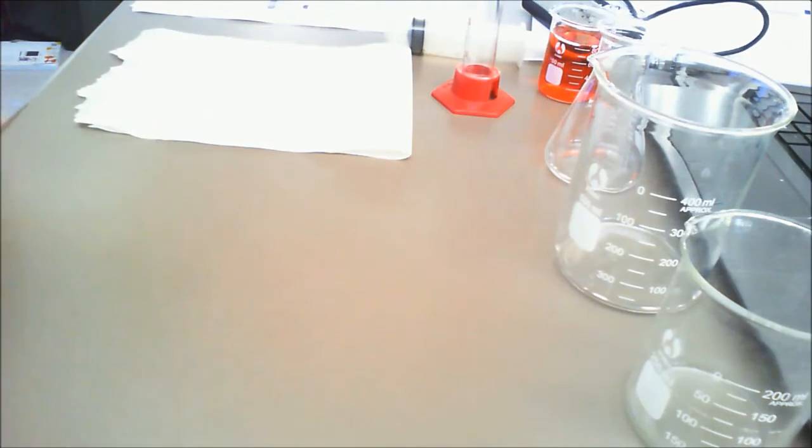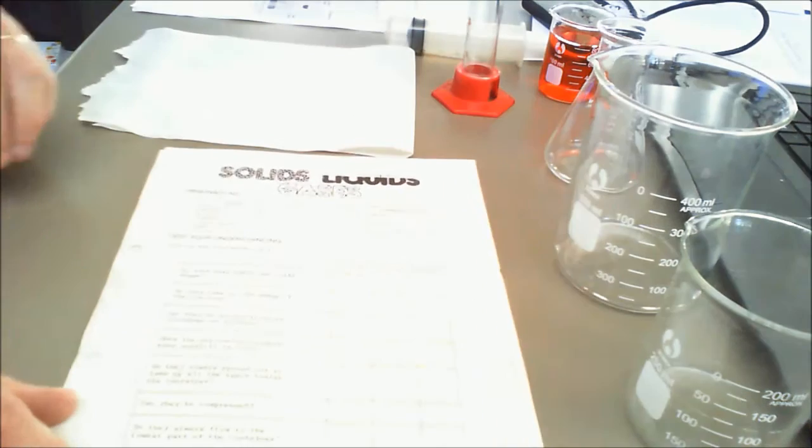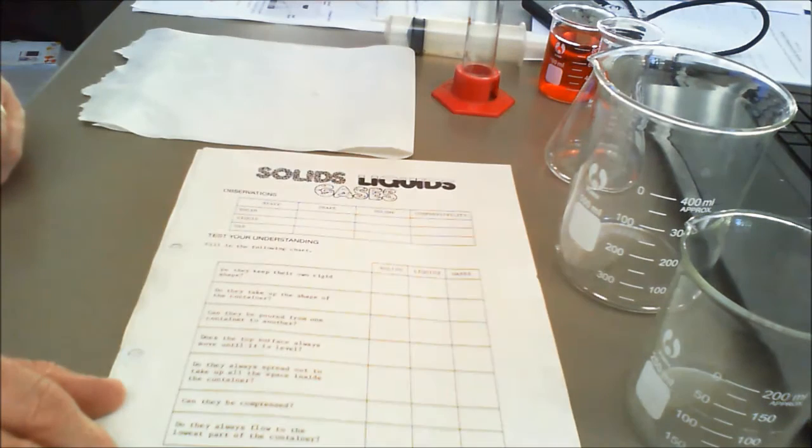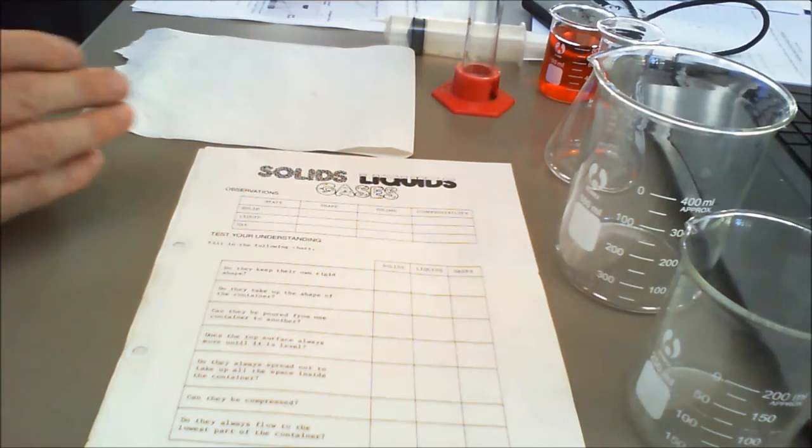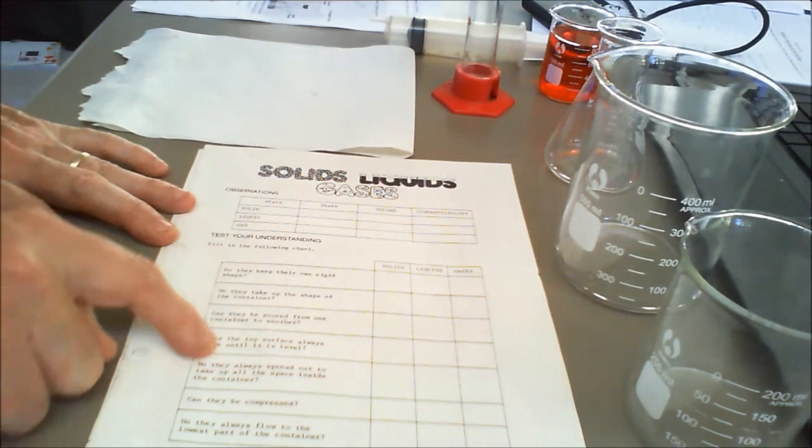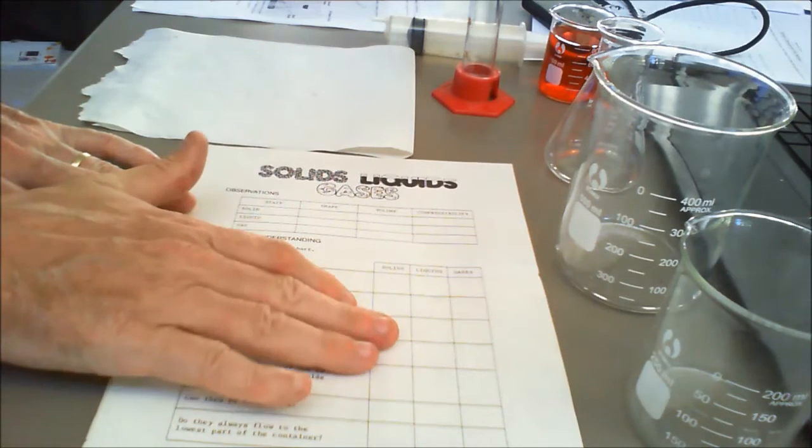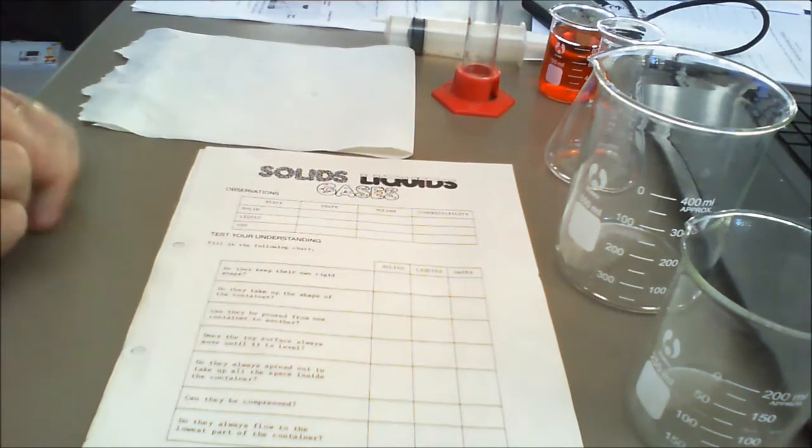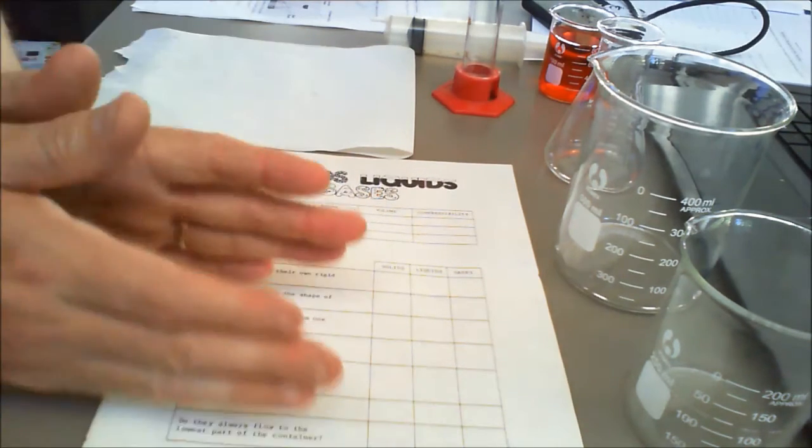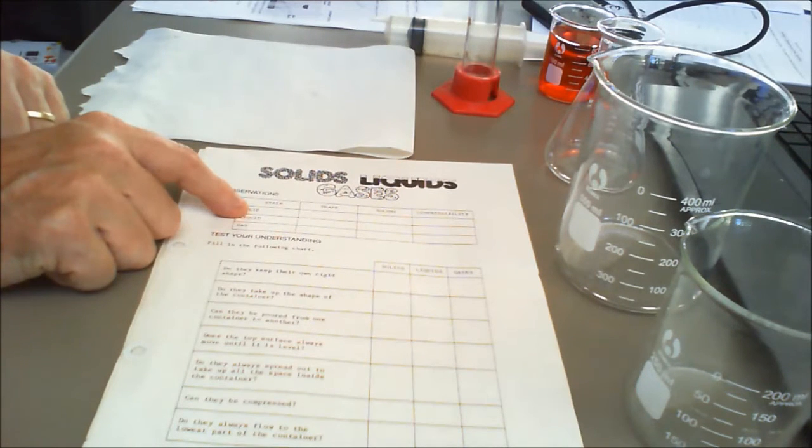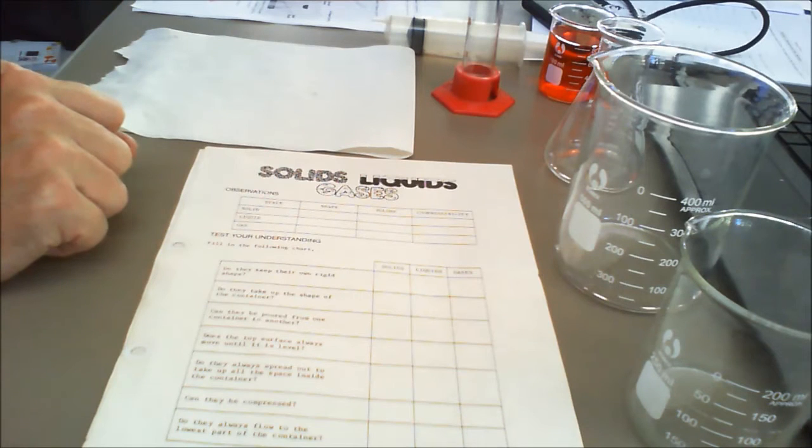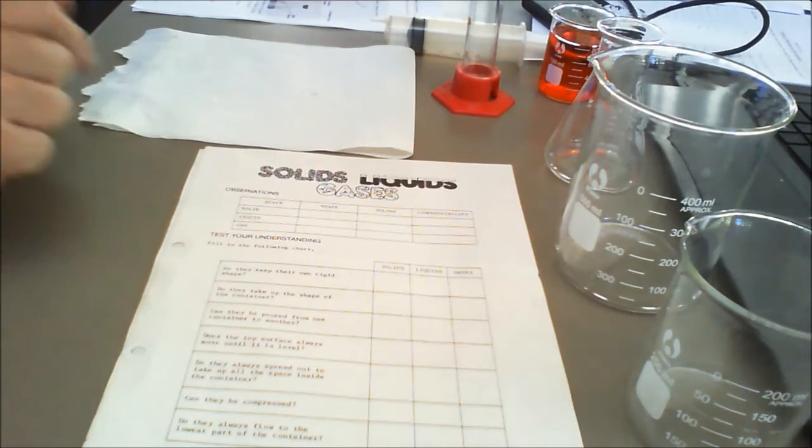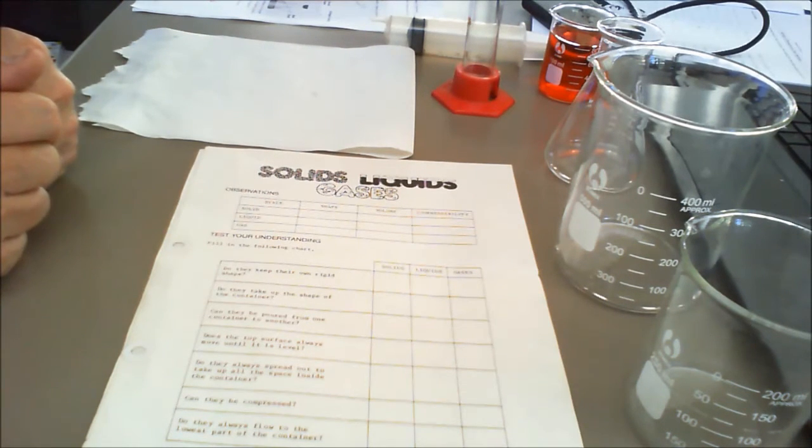Now what you'll need to do out of the connect library is if you could download this particular worksheet please and as we go along through the prac we'll answer these questions here. You can put a tick or a cross there and then from that you can then fill out the table at the top. So you'll find that in the connect library section under the heading solids, liquids and gases worksheet.